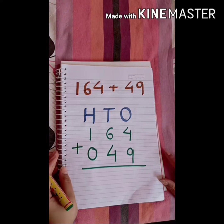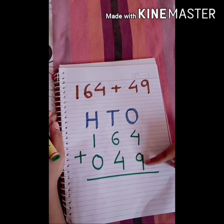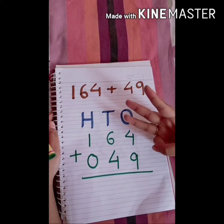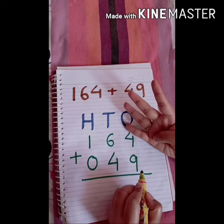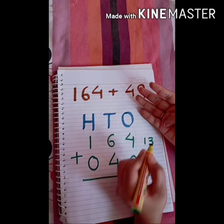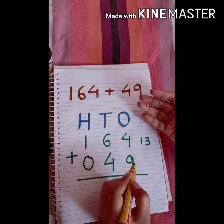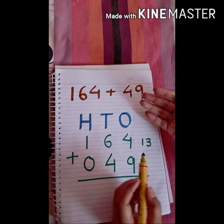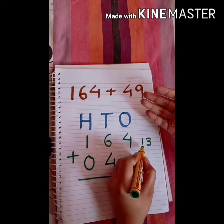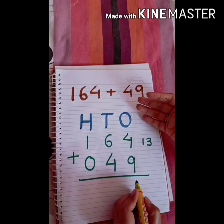Now let's add these numbers. We add the ones digits first: 9 plus 4. We keep 9 in mind and count 4 on our fingers — ten, eleven, twelve, thirteen. When we add two digits and get a number more than nine, we write the rightmost digit below and carry the other digit forward. The rightmost digit is 3, so we write 3 here.